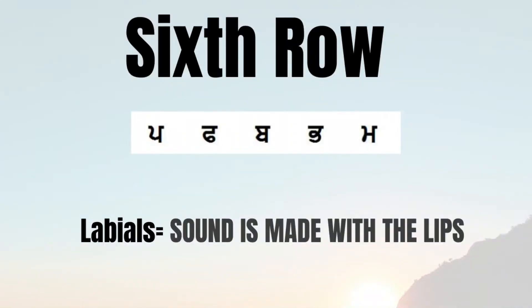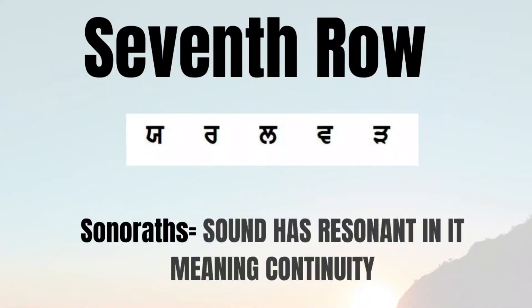The sixth row consists of consonants which are pronounced with the help of the lips; they are known as labials in the Punjabi Gurmukhi script, and in Gurmukhi they are known as pawar toli. The seventh row is known as sonorants because the consonants have resonance when they are pronounced — meaning they have continuity — and in the Gurmukhi script they are known as antim toli.